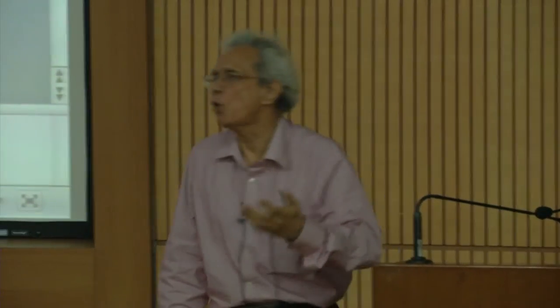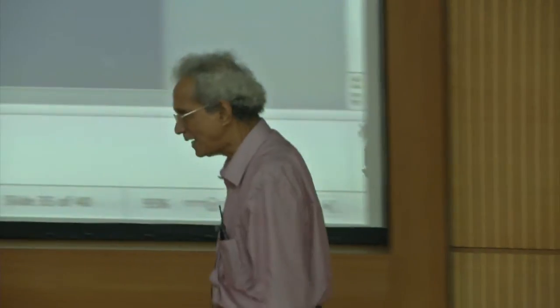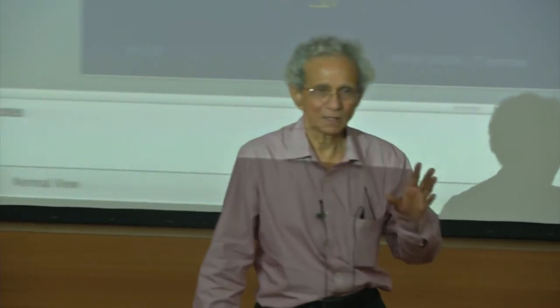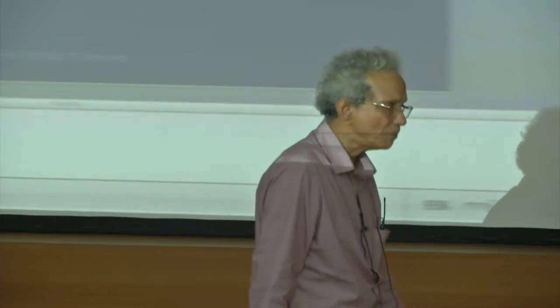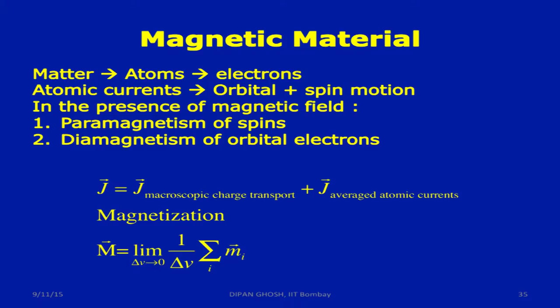Even if you take the Bohr model of an atom, the electron is moving around the nucleus and the moving current, that gives rise to an internal current or atomic current. Now the question is, these atomic currents, if you go to a little more detail, it can arise because of the orbital motion of the electrons or about the spin motion.